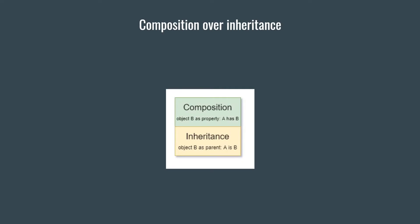There are two main ways an object can interact with another object. It can have the other object as a property, this is called composition, or it can inherit the other object, this is called inheritance.